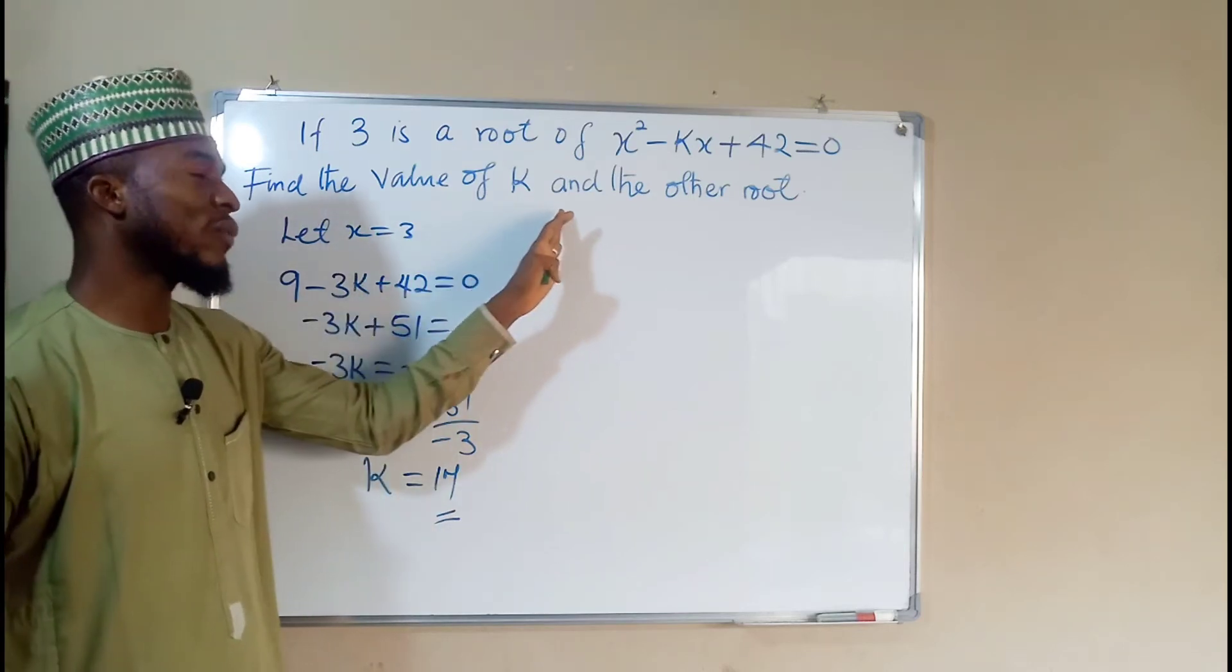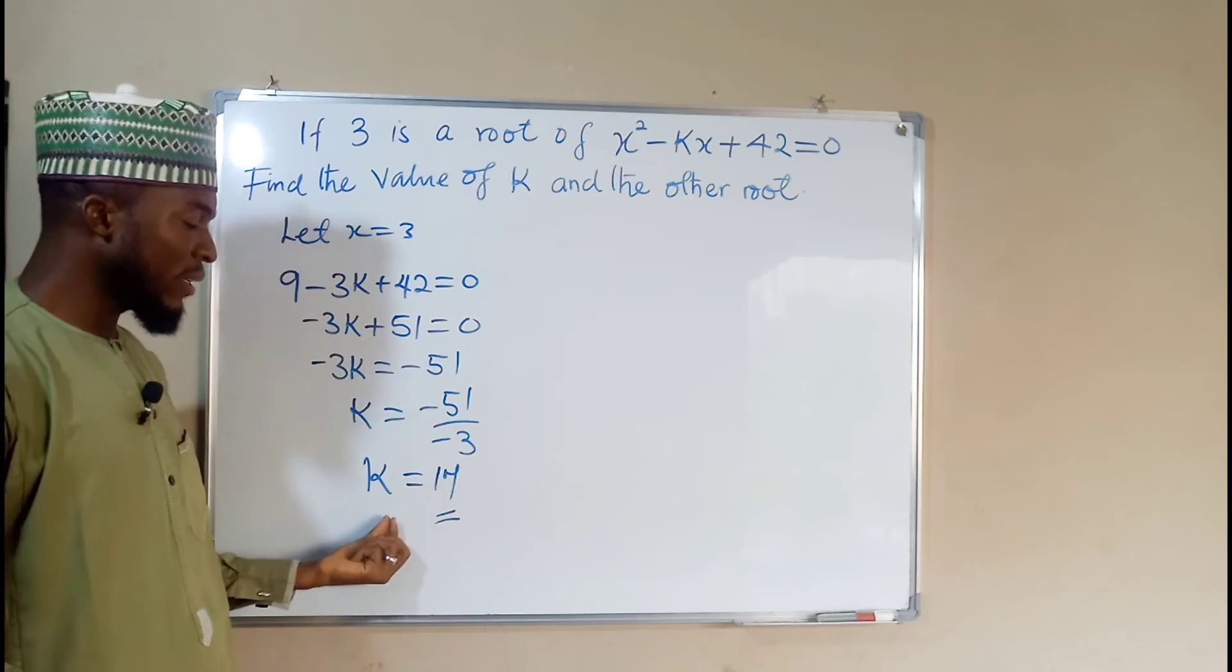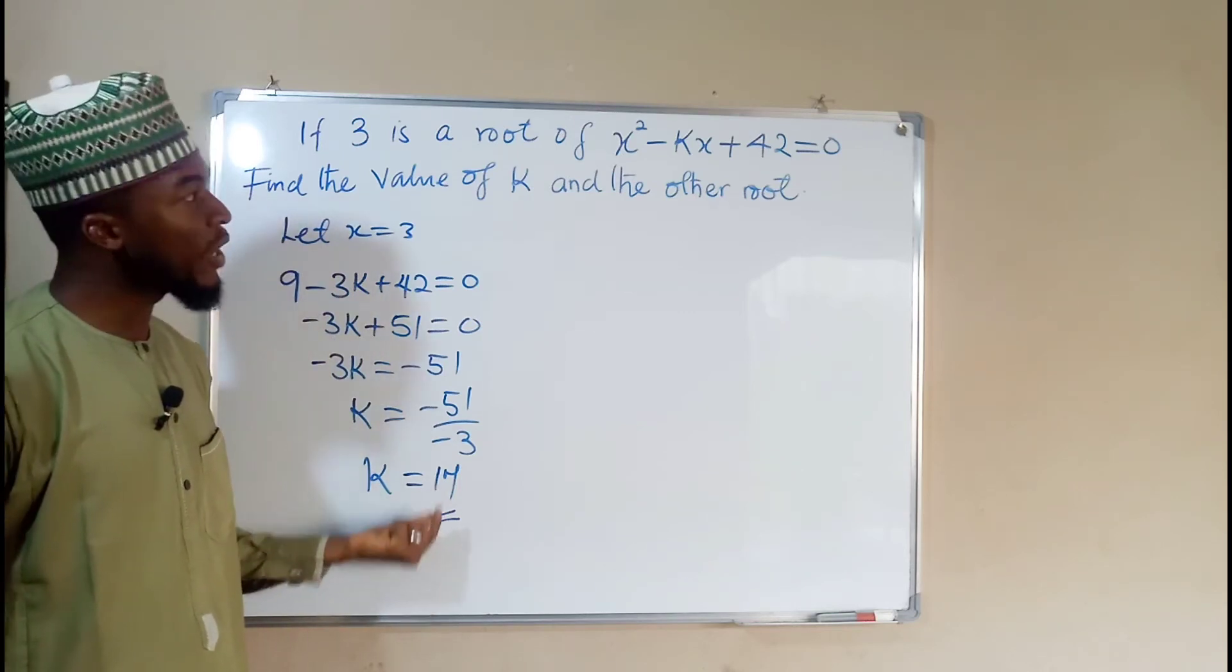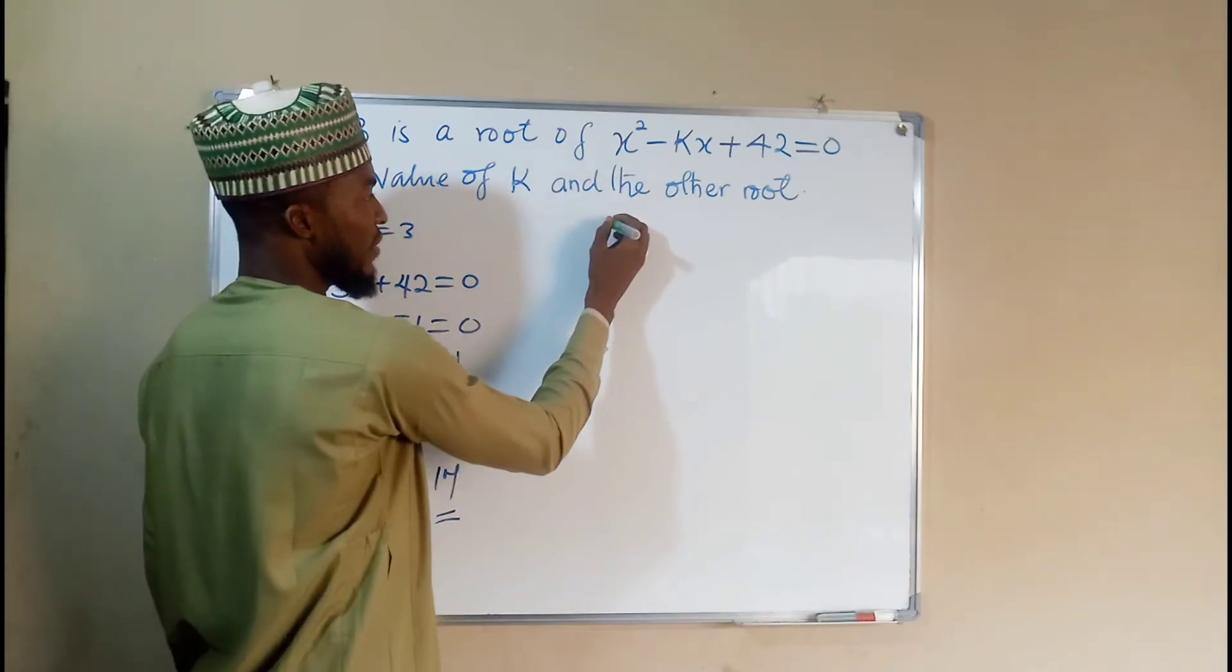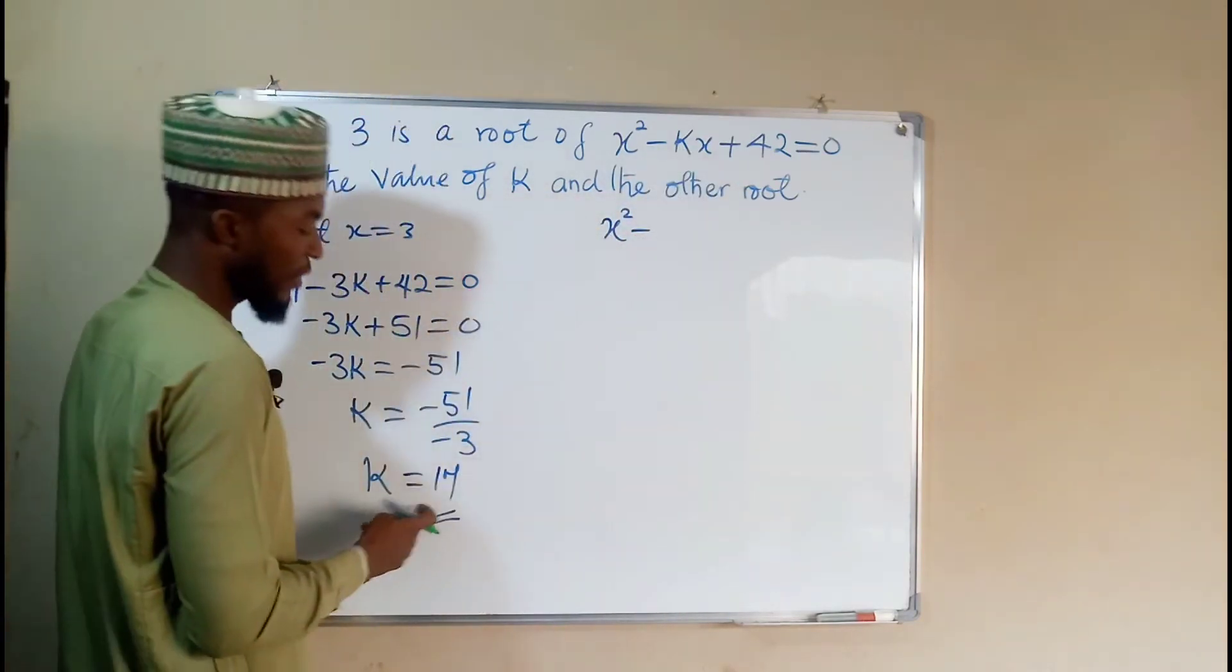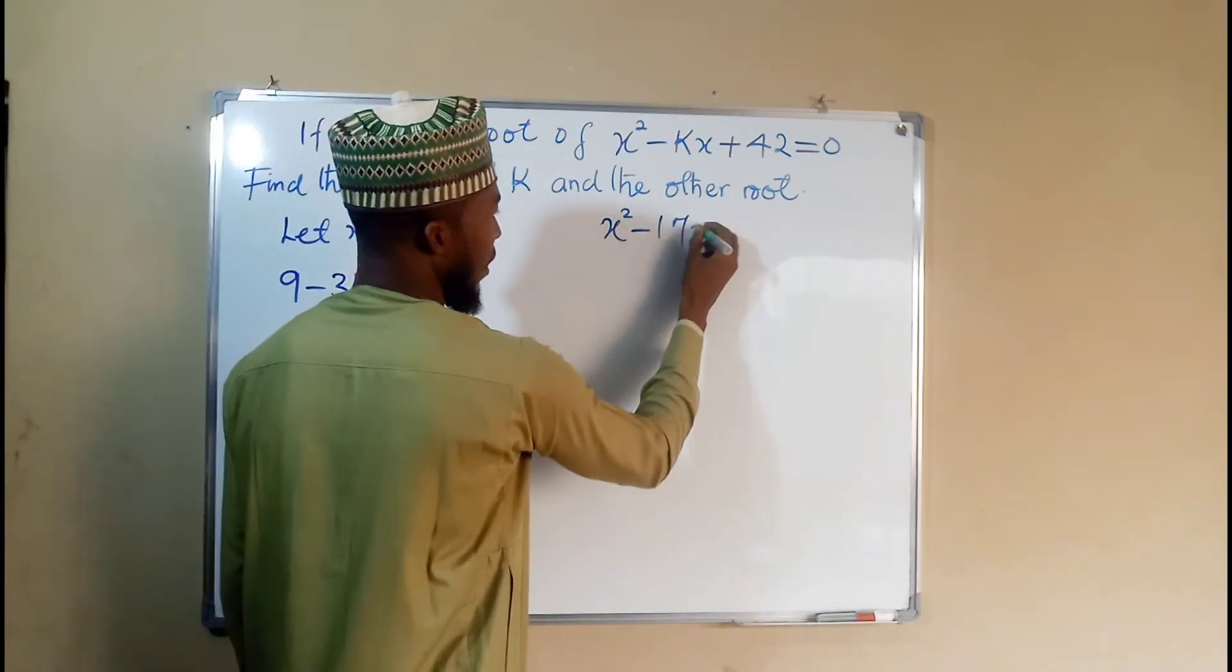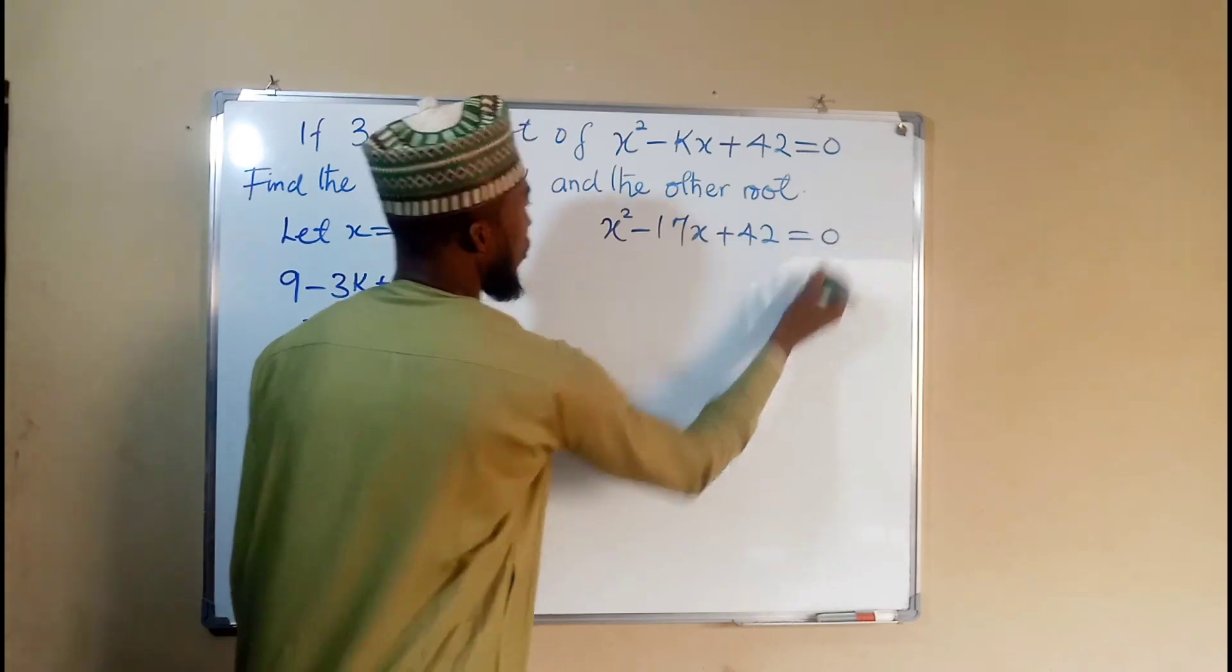But we are also asked to find the other roots of this quadratic equation. Having obtained the value of k to be equal to 17, we can substitute it back into the main equation. And the main equation is this: x squared minus kx, which is 17x, plus 42, the whole of this equal to 0.